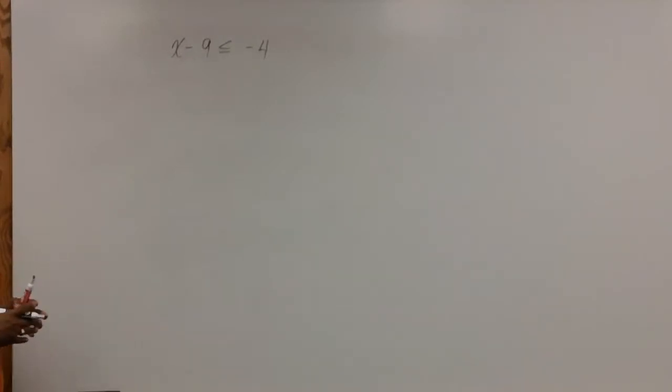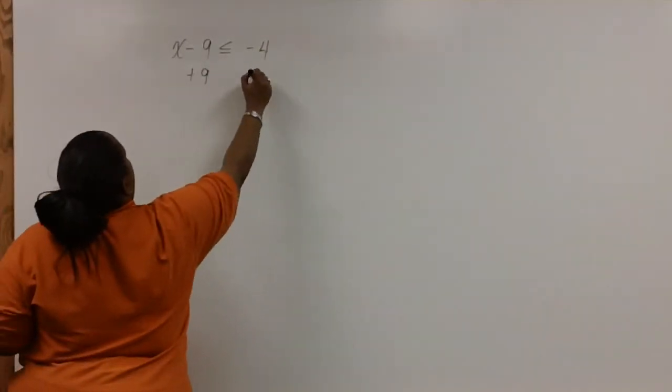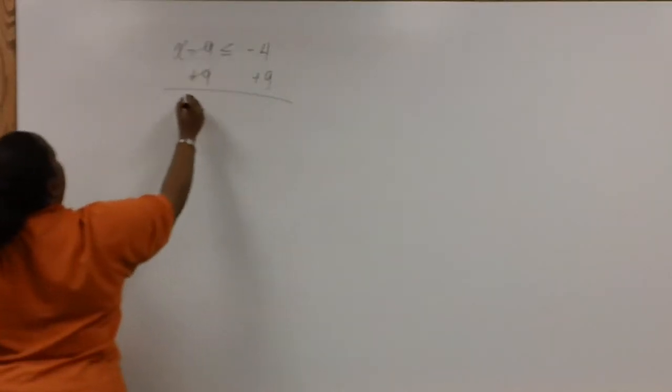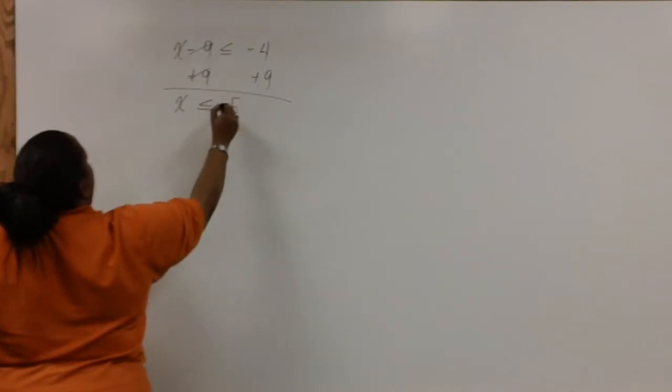Our goal is to get x by itself, so let's add 9 to both sides of the equation. We're left with x is less than or equal to 5.